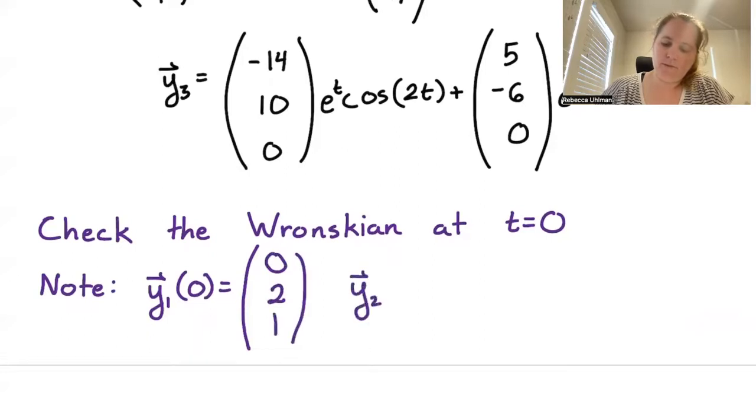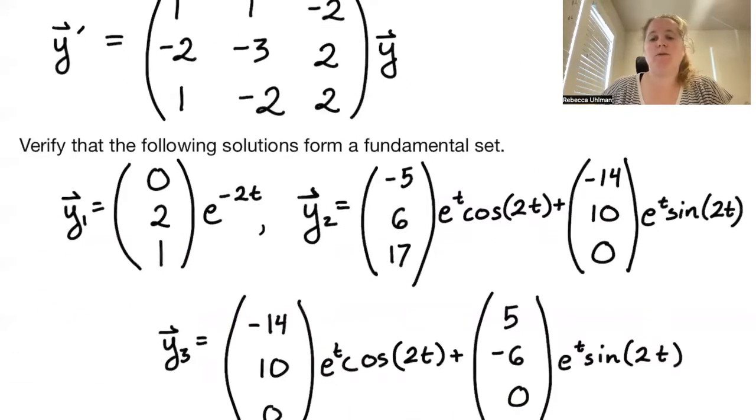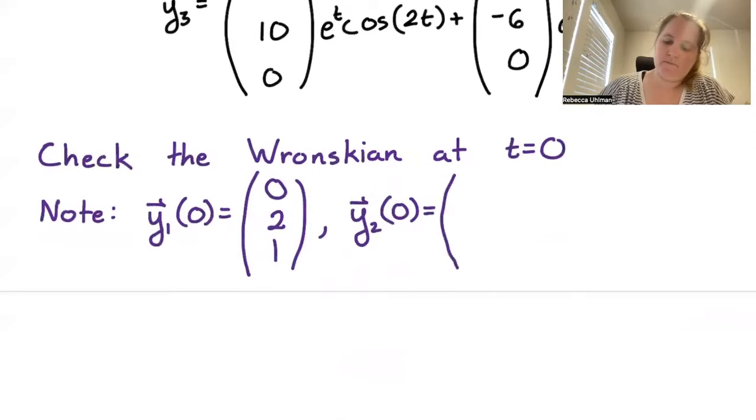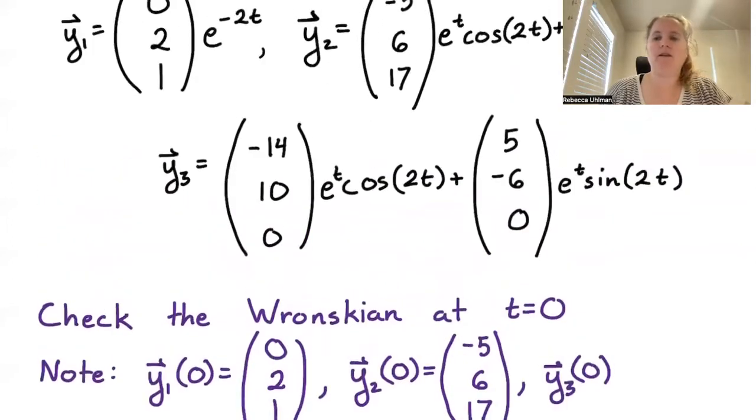Y2 of 0: that sine component will go to 0, so we just get the cosine component and we wind up with vector negative 5, 6, 17. Y3 of 0, again the sine component goes to 0 and cosine goes to 1, so we'll just have negative 14, 10, 0.